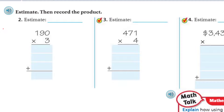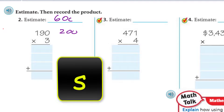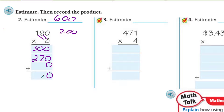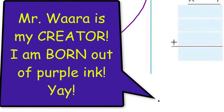Now estimate, then record the product. For 3 times 190: I'll estimate — round 190 to 200, so 3 times 200 is 600. Now partial products: hundreds first, 3 times 100 is 300. Then 3 times 90 is 270. Then there's a zero in the ones place, so 3 times 0 is 0. Add the partial products: 300 plus 270 plus 0 equals 570. Is 600 close to 570? Yes, so my answer is reasonable.